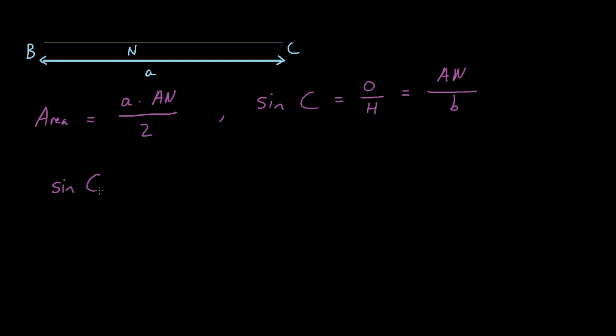Sine C equals AN over B. If we multiply both sides of this equation here by B, we get AN equals B multiplied by sine C.